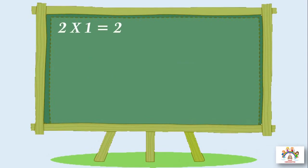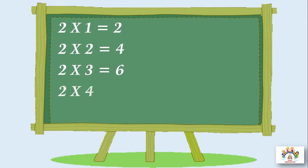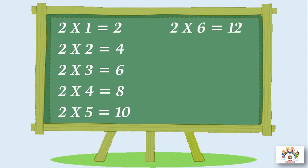Two ones are two, two ones are two. Two twos are four, two twos are four. Two threes are six, two threes are six. Two fours are eight, two fours are eight. Two fives are ten, two fives are ten. Two sixes are twelve, two sixes are twelve.